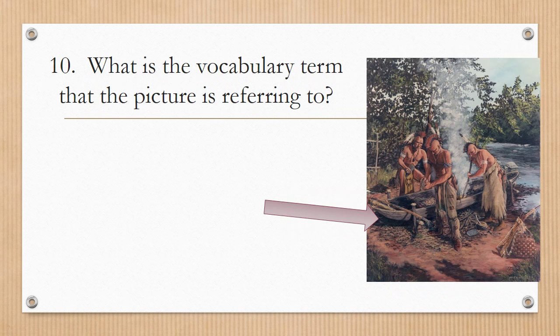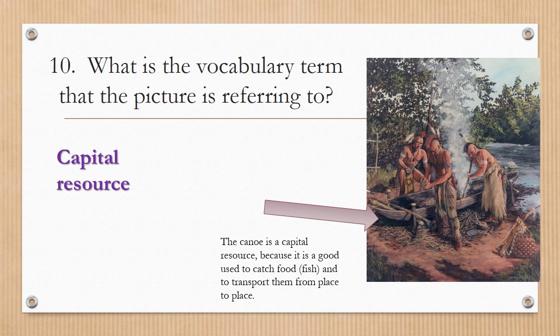Number ten: what is the vocabulary term that the picture is referring to — is it a capital resource, a natural resource, or a human resource? The answer is capital resource. The canoe is a capital resource because it is a good used to catch food, to catch fish, and to transport the natives from place to place.